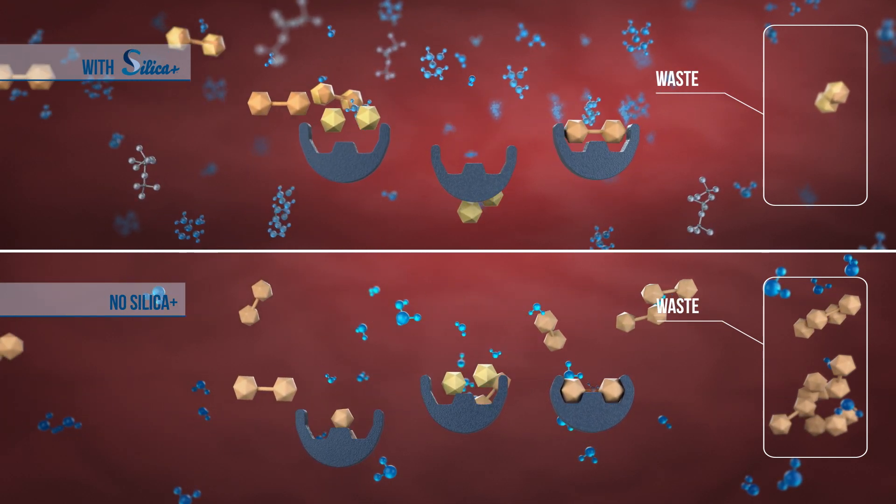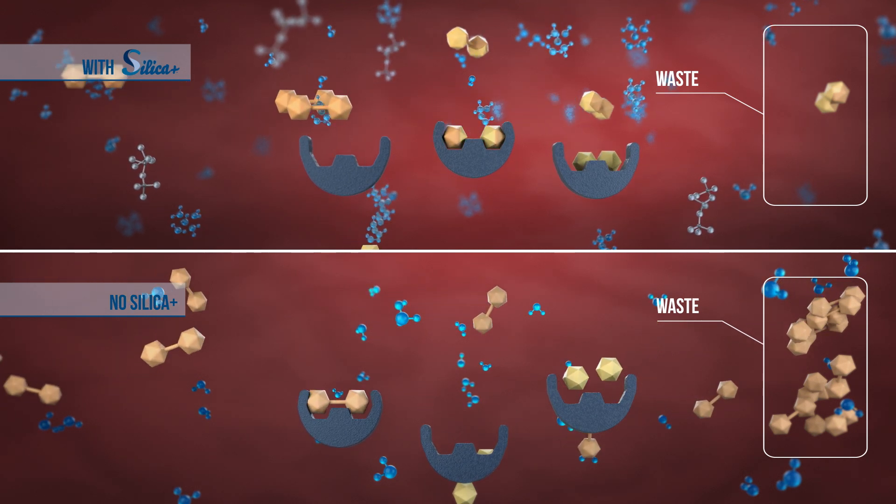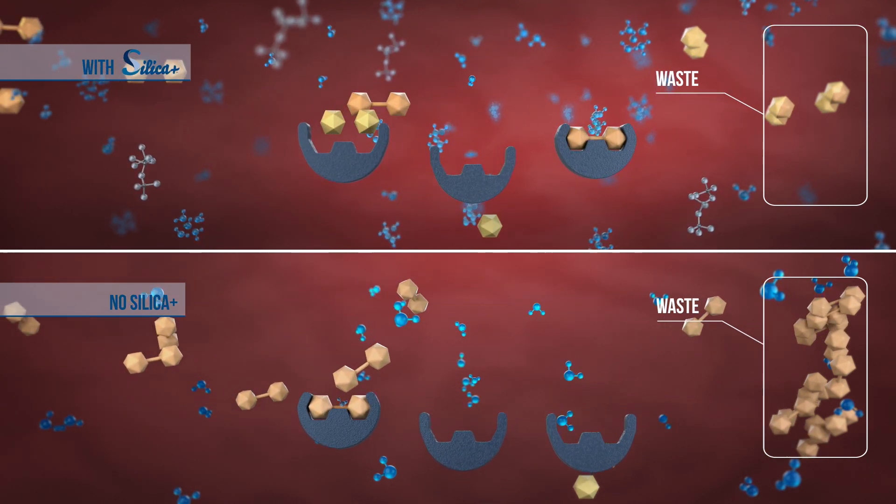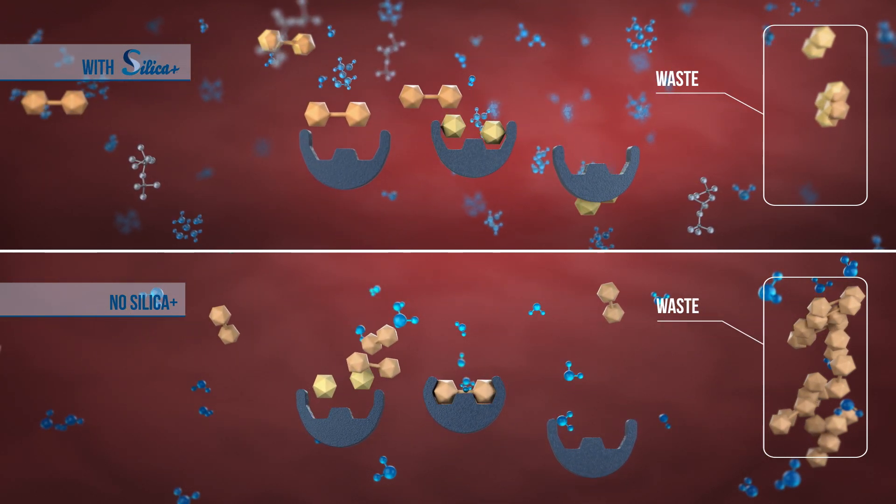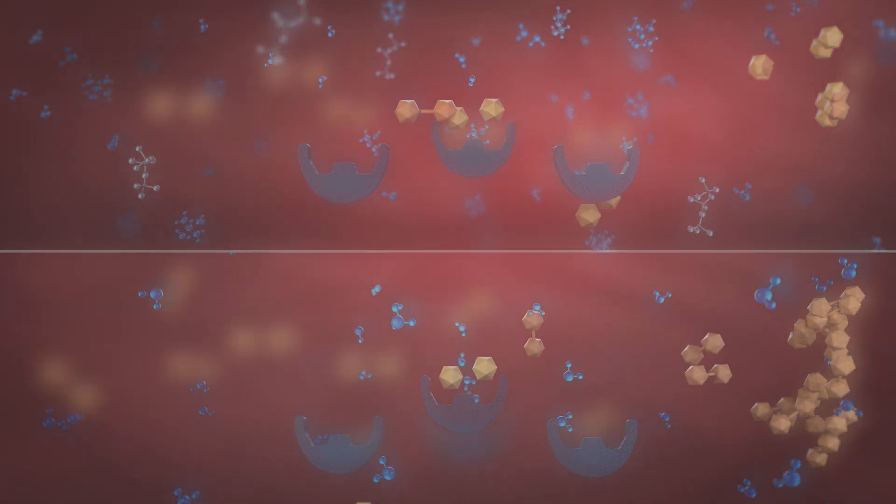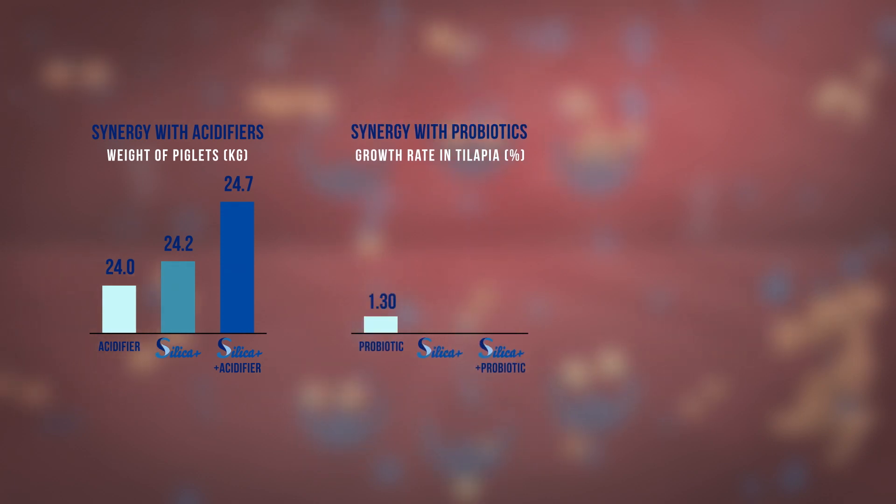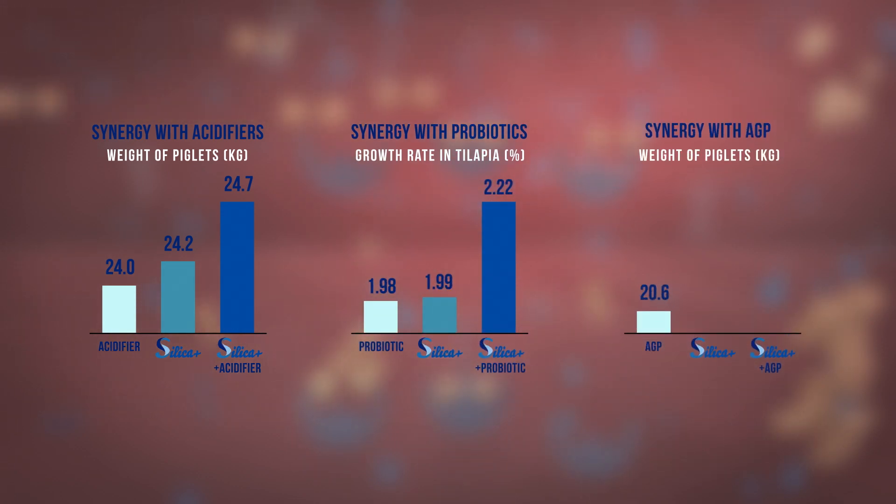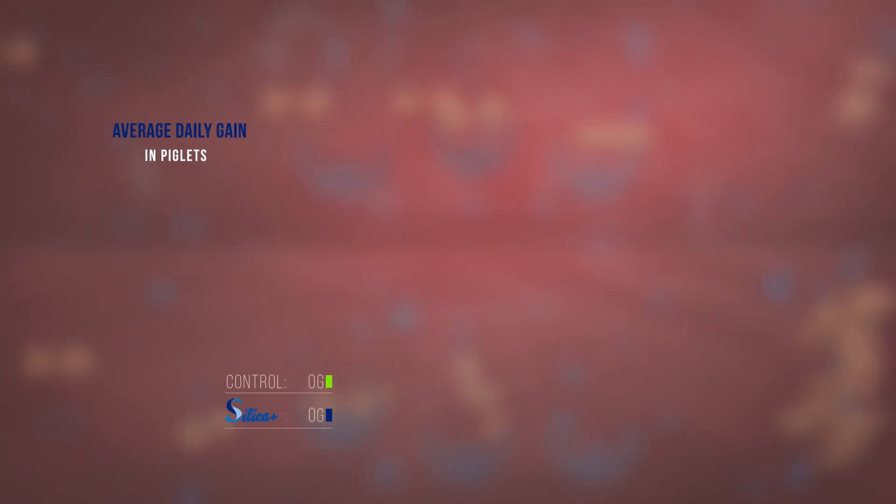Any biochemical reaction happening in the gut is due to an exchange of electrons through water. This is true for digestion, absorption and assimilation of nutrients. This is why by speeding up ionic exchanges, Silica Plus improves the efficiency of not only nutrient absorption, but also acidifier action, pre- and probiotic effect, as well as antibiotic efficiency. The tangible benefits of this increased efficiency have been proven in numerous studies.